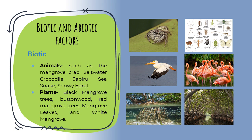Biotic factors are those that actually have life, which we can easily recognize, such as animals. In Mexico's mangroves we have the mangrove crab, the saltwater crocodile, the jarru, the sea snake, the snowy egret, the white pelican, and different kinds of insects and spiders. The plants found in Mexico's mangroves include black mangrove trees, buttonwood, red mangrove trees, mangrove leaves, and white mangrove.